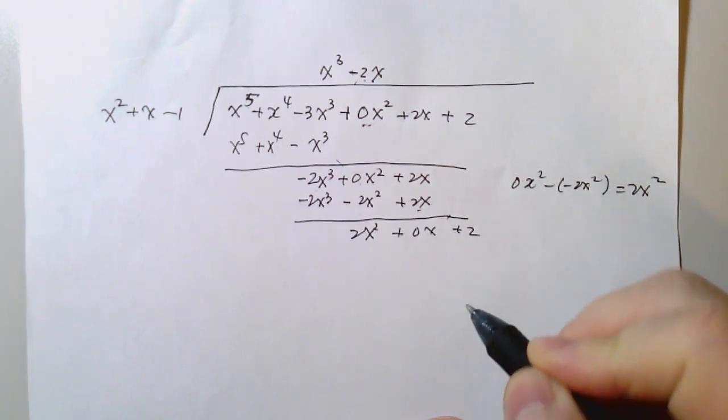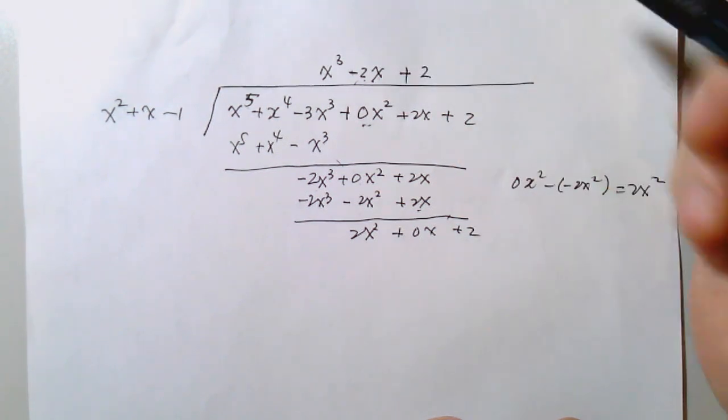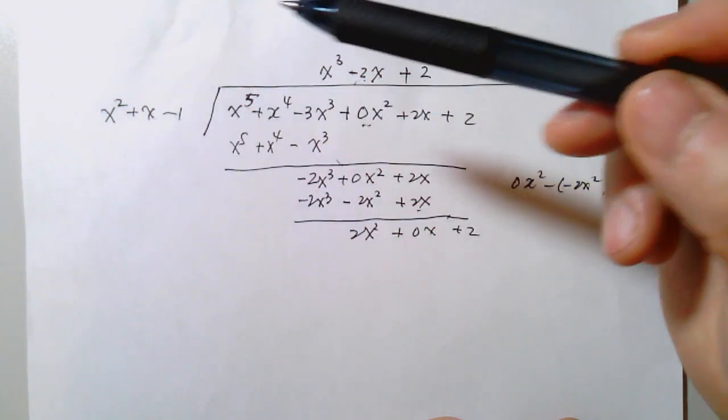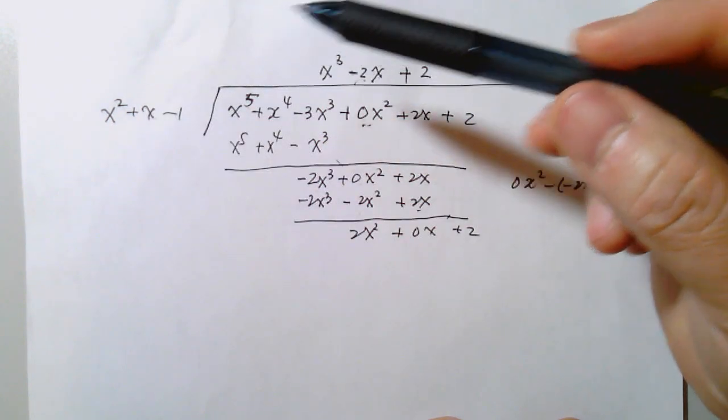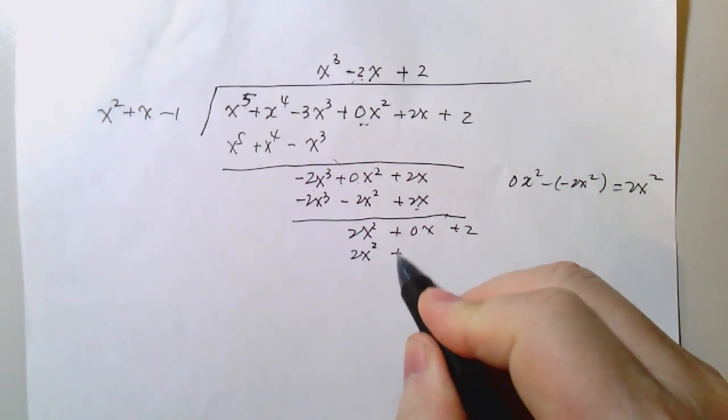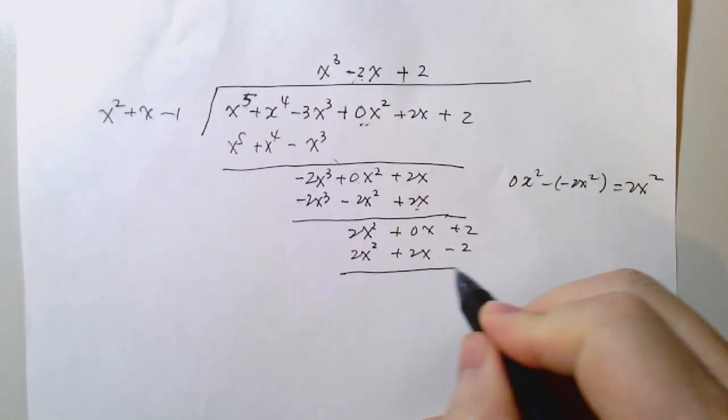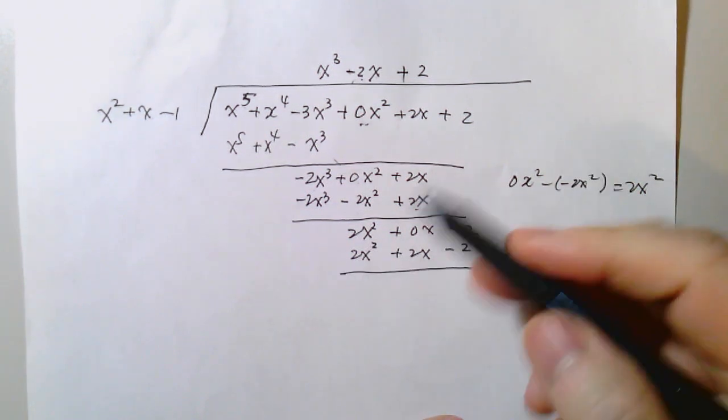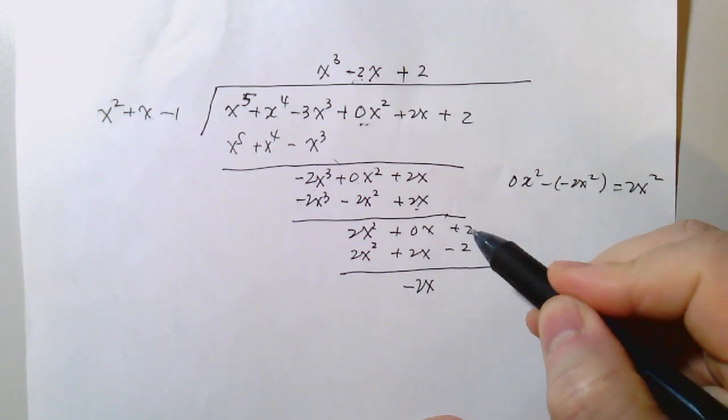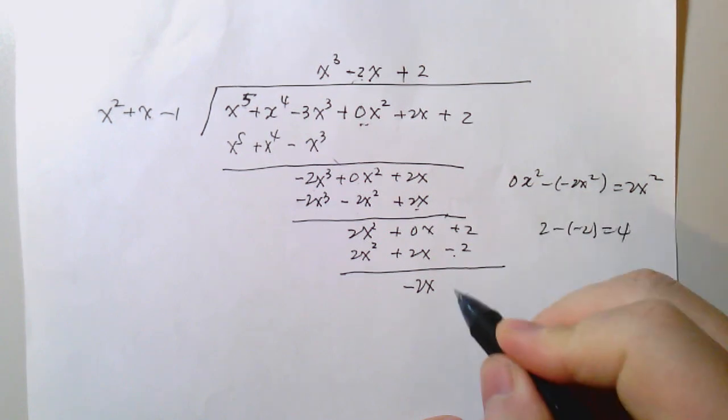So finally you're going to put 2 there, and we have 2x squared, plus 2x minus 2. So let's cancel this, let's give you negative 2x, 2 minus negative 2, 2 minus negative 2, which is 4. So that's a plus 4.